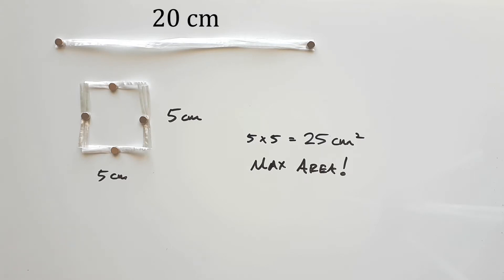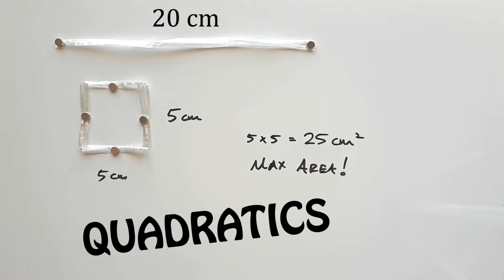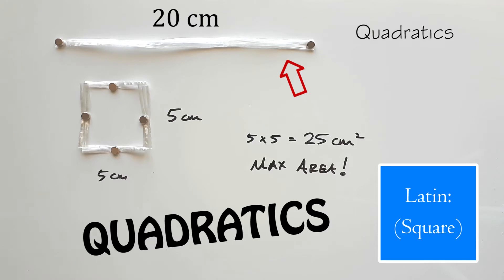The main reason is because of something known as quadratics, which is Latin for square. Today I will show you how the string, quadratics, parabolas, and the turning point come together to reveal the square as the best shape.